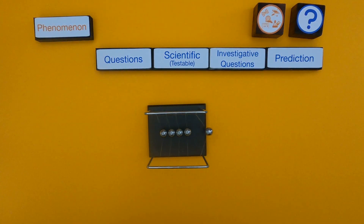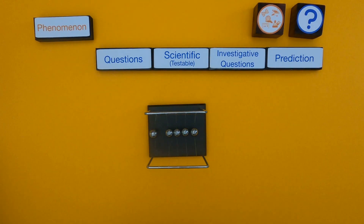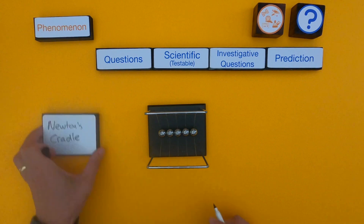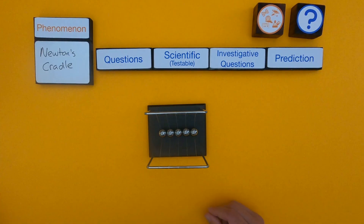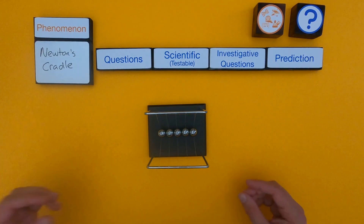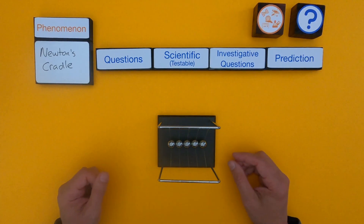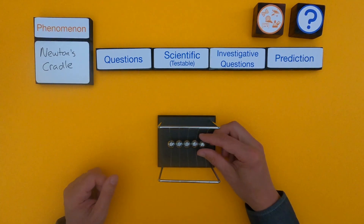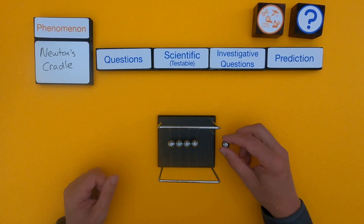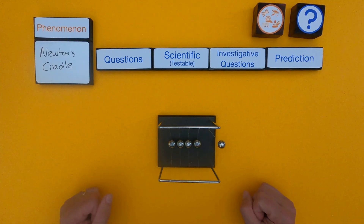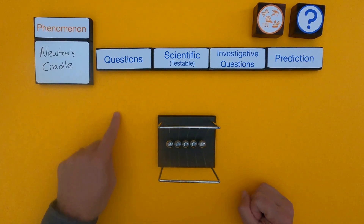For the first phenomena, we're going to use something that a lot of you are probably familiar with — that's called the Newton's Cradle. The first thing you always want to do is either play with a device or watch a phenomena. What you want to do is just come up with some interesting questions: what are you wondering about? I'm going to list those right here.